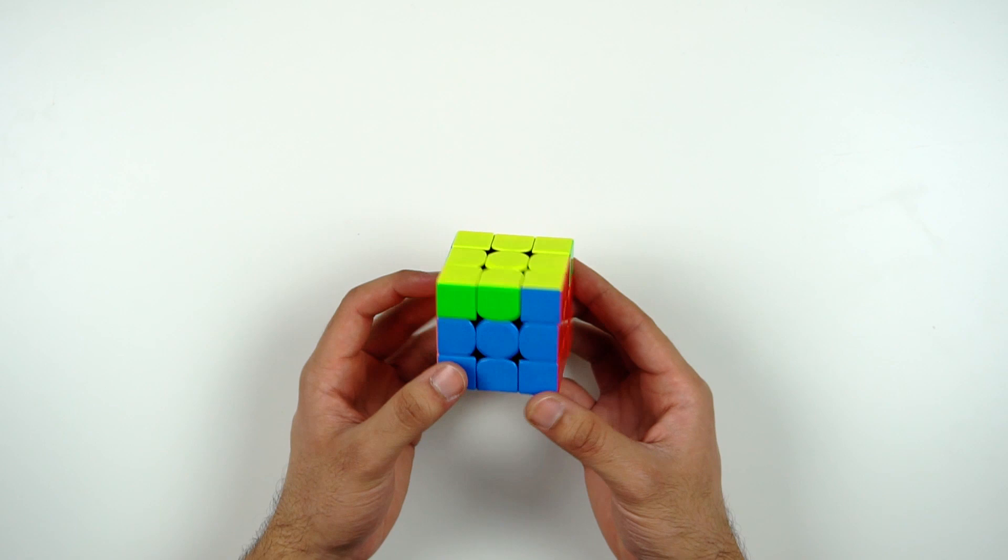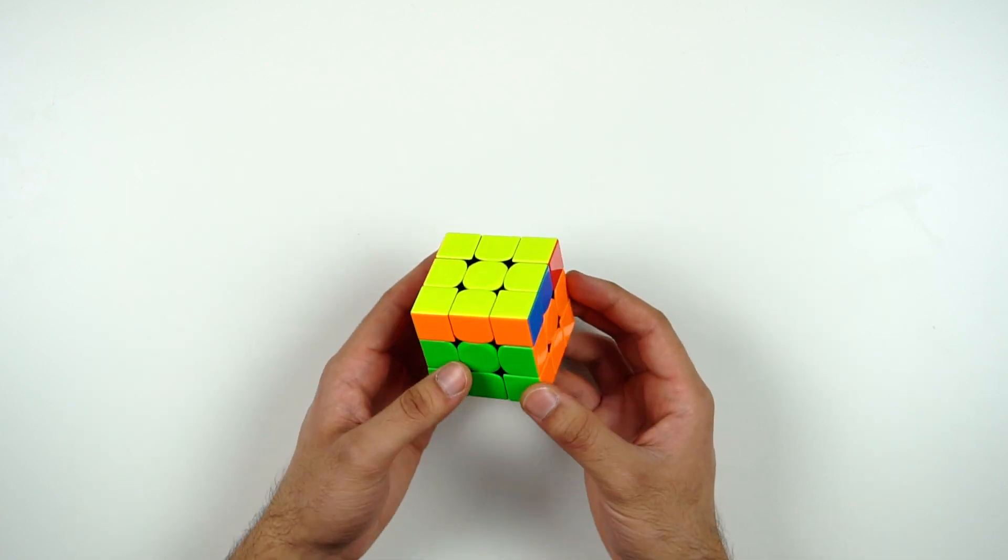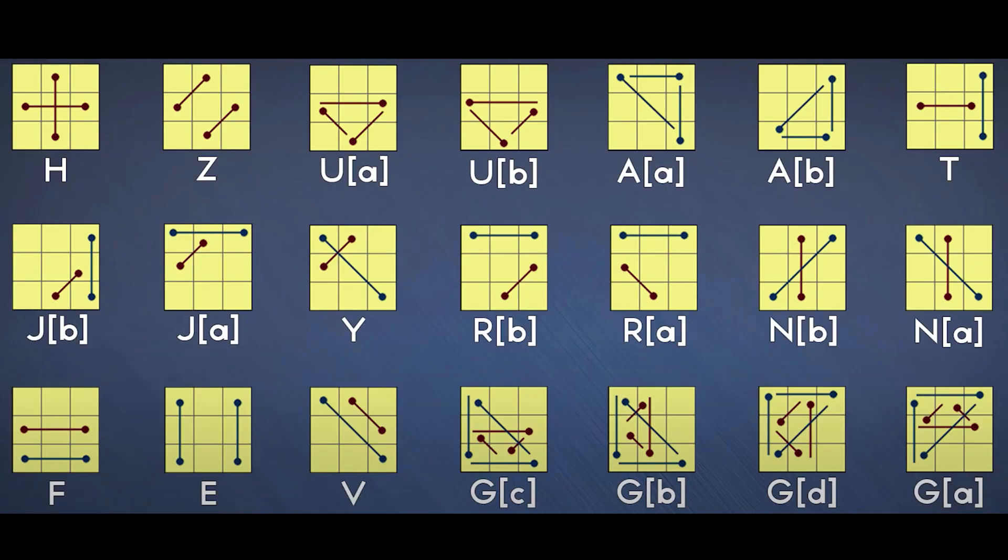So after we orient all the pieces on the last layer, we now have to move them to their proper positions to finally solve the cube, and this brings us to the last stage of CFOP, PLL. PLL stands for permuting the last layer, and in total there are 21 different PLL cases for which we also need to learn algorithms.